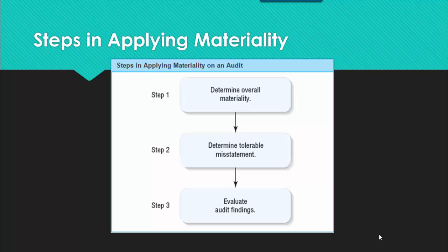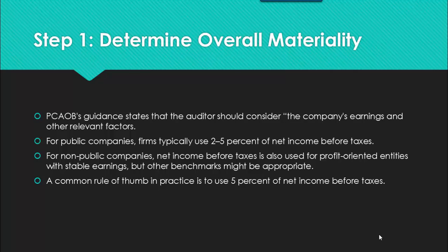There are three specific steps in applying materiality to the audit. The first is to determine the overall materiality related to the financial statements. The next step is to determine the tolerable misstatement, and then finally to evaluate the audit results.